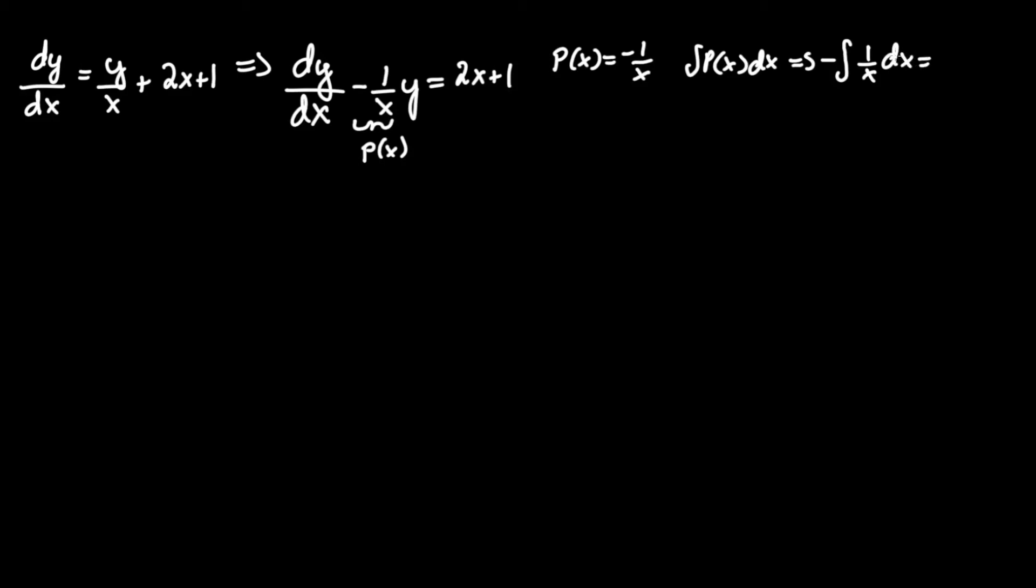This equals negative integral of 1 over x dx. From calculus 1, the integral of 1 over x is ln x, multiply by negative 1 to get negative ln absolute value of x. We don't need plus c yet since we apply that when we finally form the general solution.